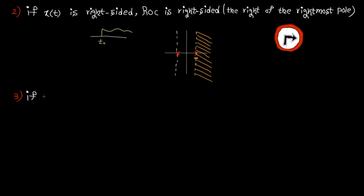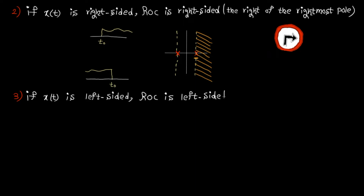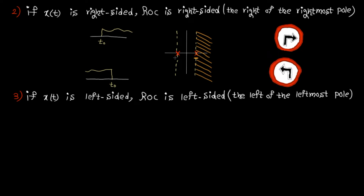Rule number three: if x(t) is left-sided — meaning the signal starts from minus infinity and ends at an arbitrary time t-naught — then the ROC is left-sided, meaning it lies to the left of the leftmost pole. Using the same example, the ROC extends to the left of the leftmost pole.